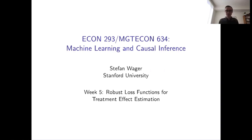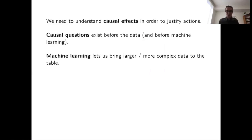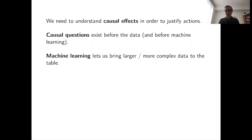Hi everyone, welcome back to machine learning and causal inference. The overarching pitch of this class so far has been something like this: we need to understand causal effects in order to do good data-driven decision-making. Causal effects are out there, they're defined in terms of potential outcomes, they exist before you collect any data and certainly before you think about applying any method to the data.